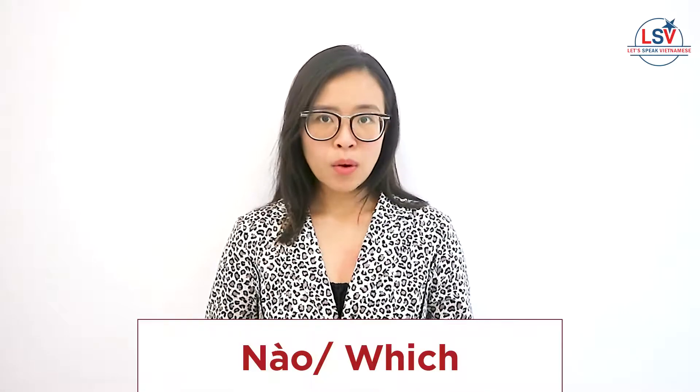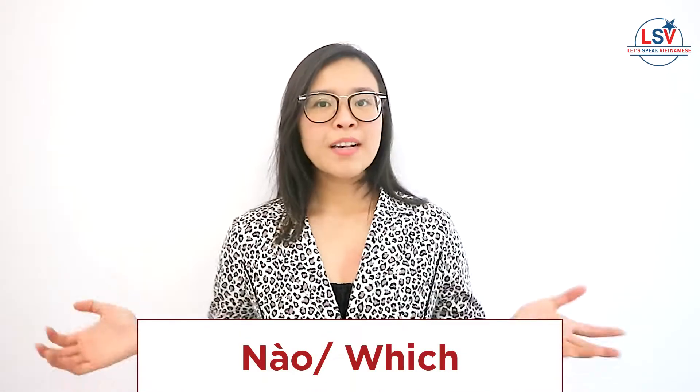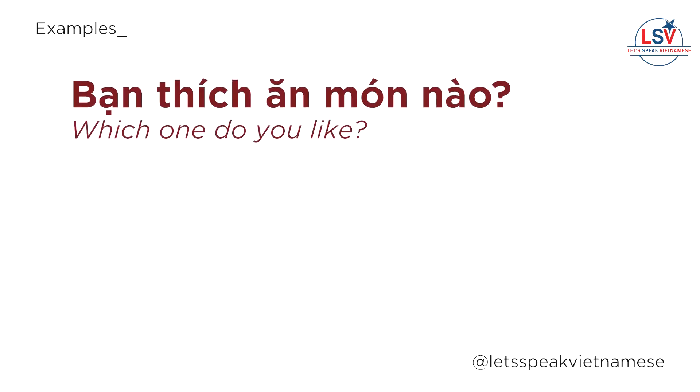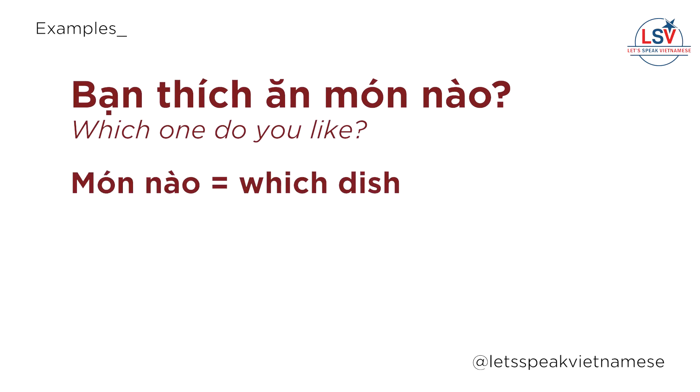Next we have nào, meaning 'which.' For example, if I have two dishes — phở and bún chả — and I want to ask which dish you like, in Vietnamese I say: bạn thích ăn món nào? Here, món nào means 'which dish.'